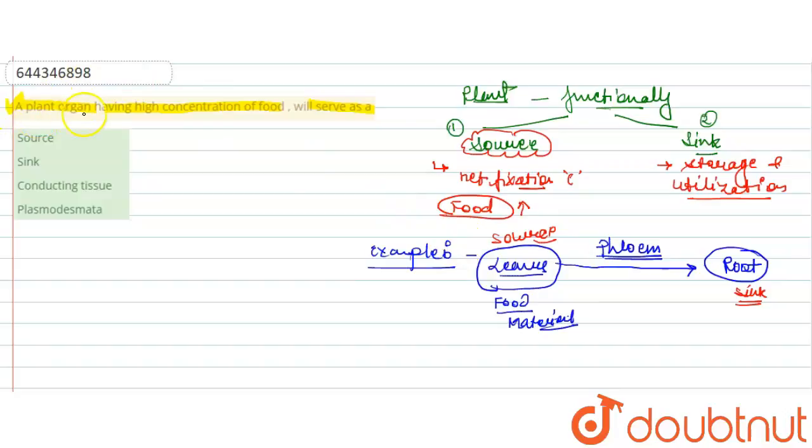If we see the question, plant organ having high concentration of food will serve as source. So the correct answer here is option A.